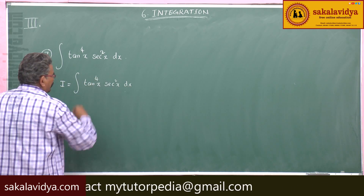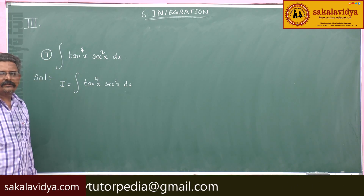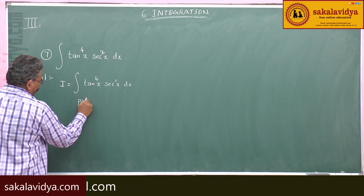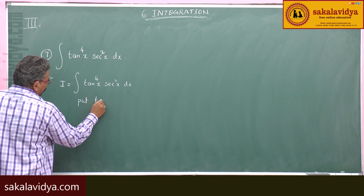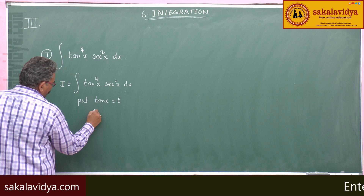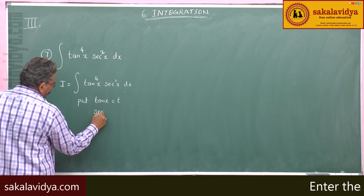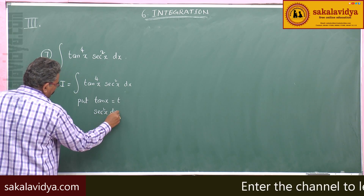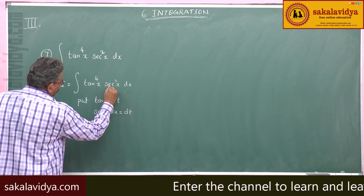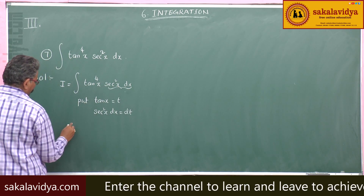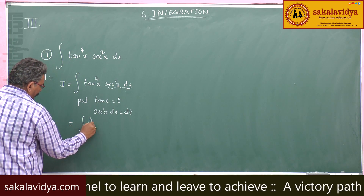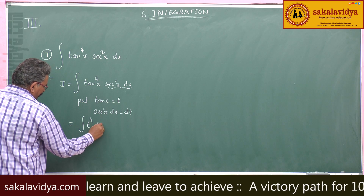The secant square x is the derivative of tan x. Put tan x equal to t; this gives secant square x dx equal to dt. So we have integral t to the power of 4 dt.